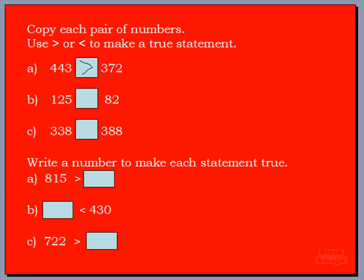Next one — 125 on the left and 82 on the right. Let's look at our hundreds column. On the left side we have 1 in the hundreds column, and for 82 there isn't a number in the hundreds digit — it's just a tens digit. So we know right away which number is greater. 125 is greater than 82.